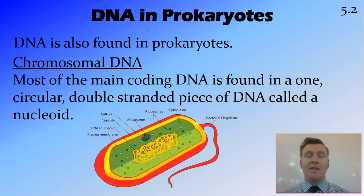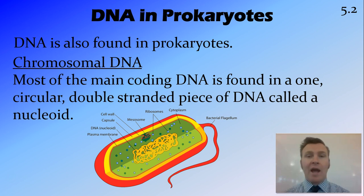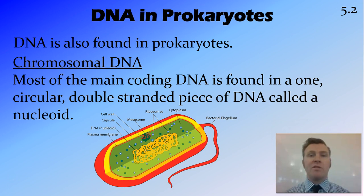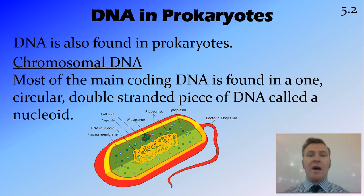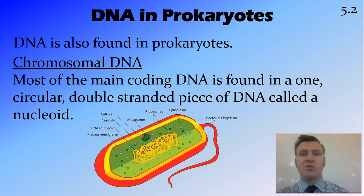Moving on to prokaryotes: prokaryotes also have two sets of DNA. They have their chromosomal DNA. Remember that prokaryote means before the envelope — they don't have nuclear-bound organelles, so they don't have a nucleus or mitochondria. Their main coding DNA is found as a double-stranded, circular piece of DNA where the two strands are wrapped around each other and join end-to-end. It's not wrapped in a helical superstructure like in eukaryotes, but there is a superstructure that goes with it.